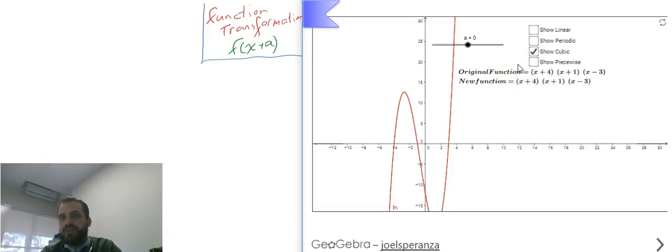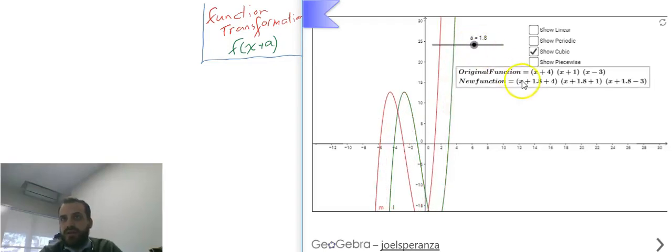That's what f of x is. f of x equals x plus 4, x plus 1, x minus 3. If I add a to this, look carefully at what's happening. I'm adding 1.8 to each of those x values. I'm adding 1.8 there, I'm adding 1.8 there, I'm adding 1.8 there. Okay, just get rid of that.